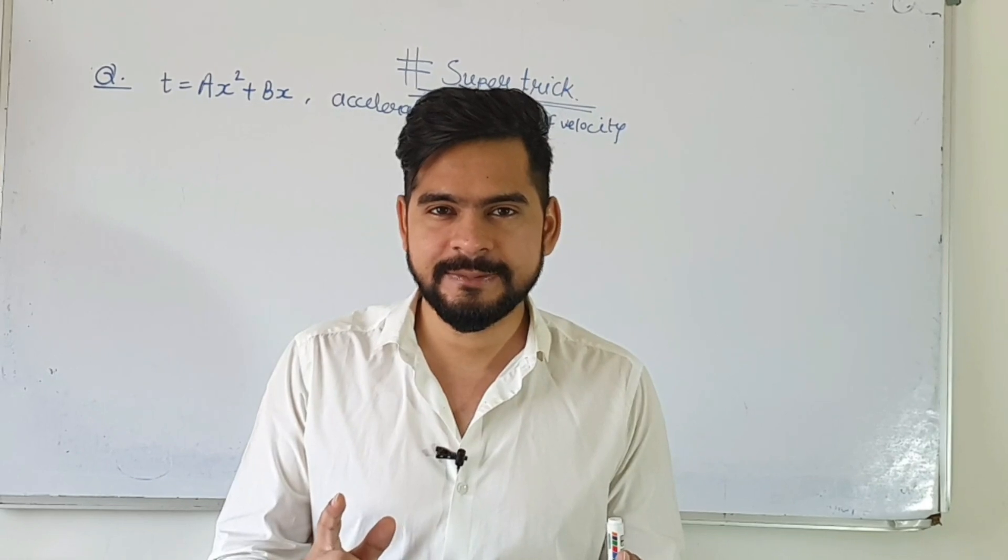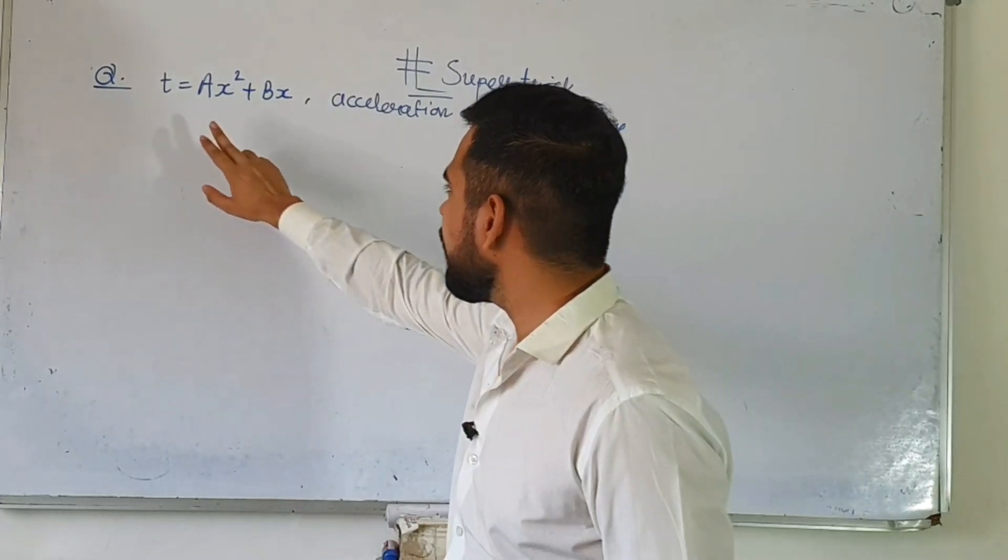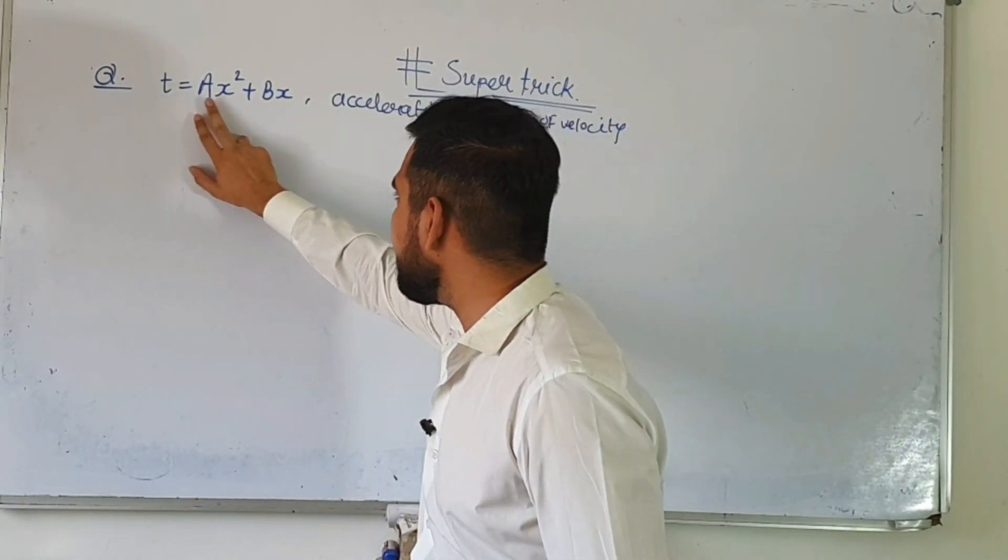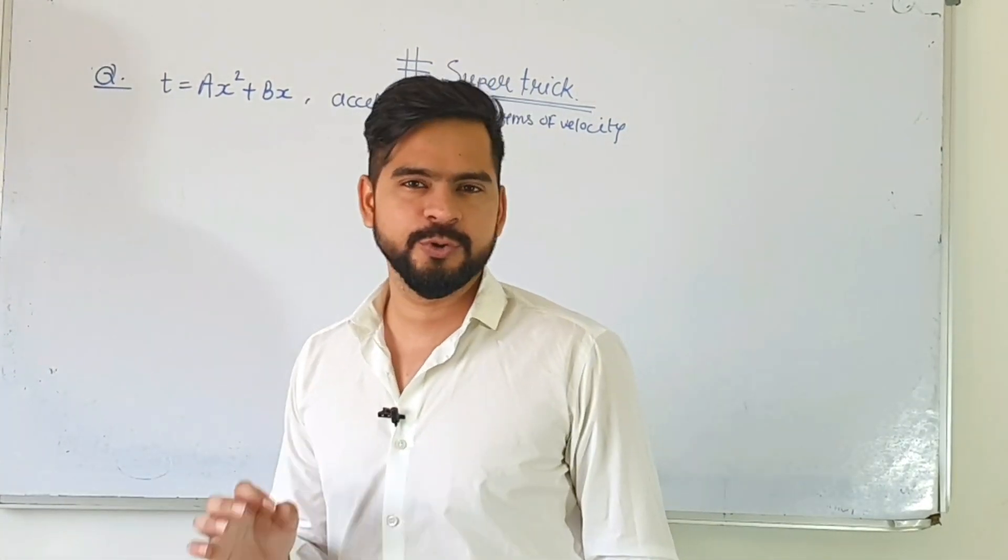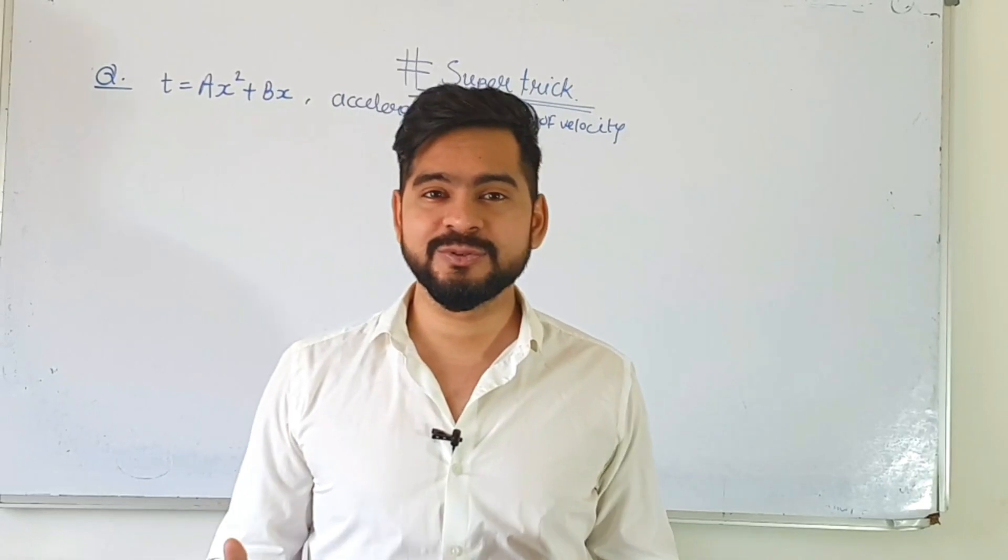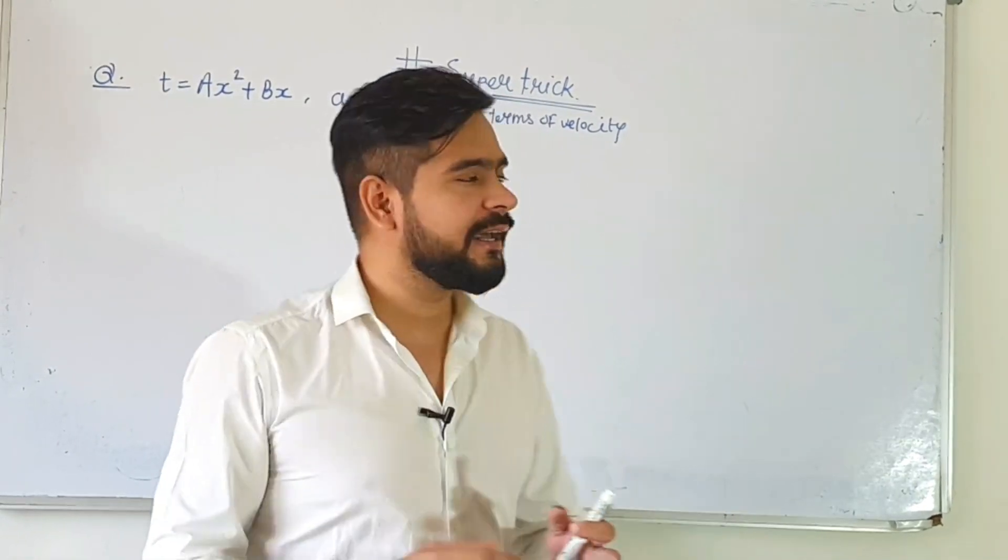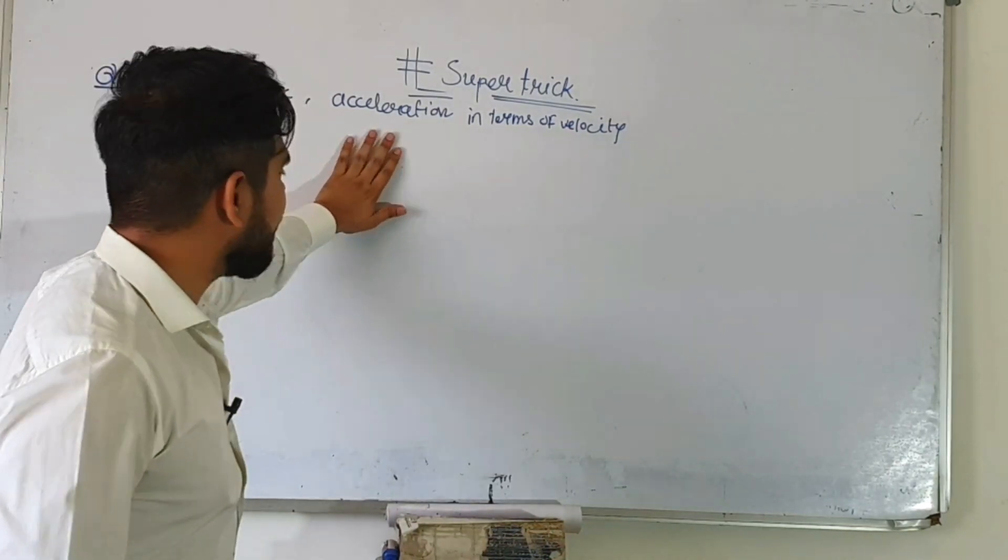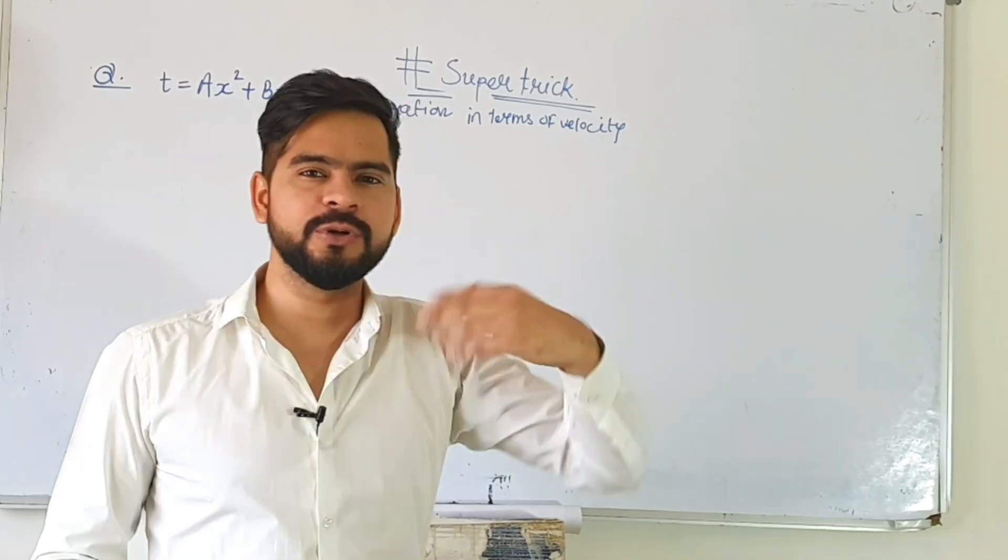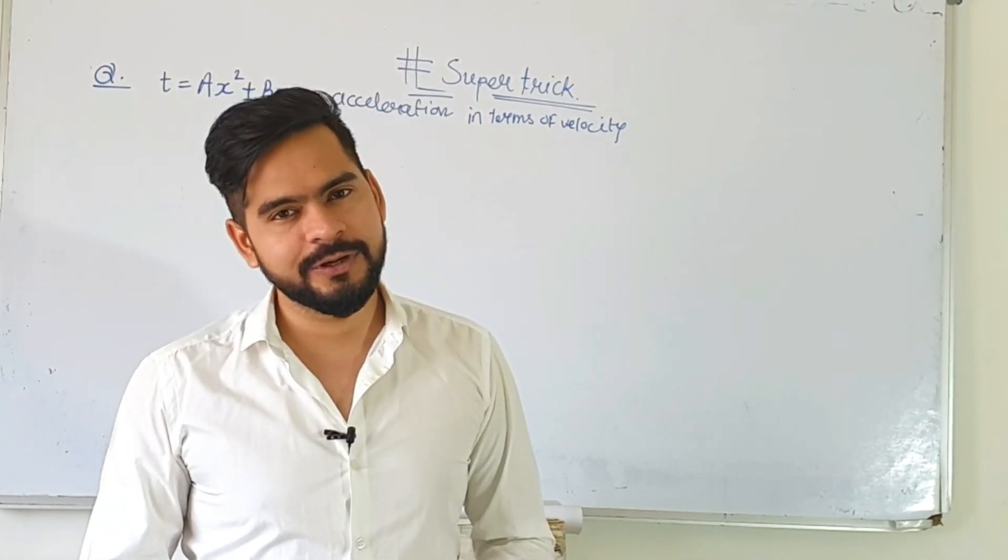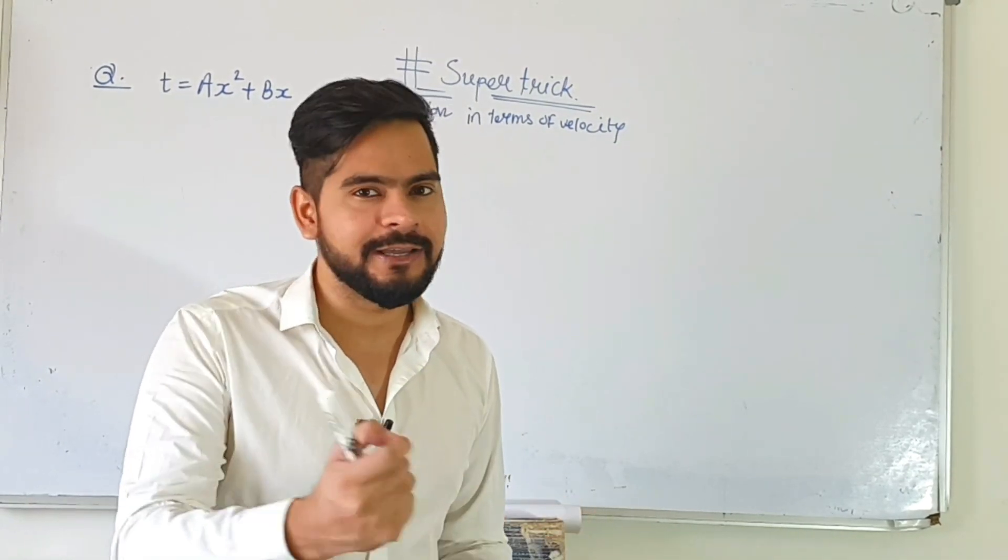So the question is: time t equals ax square plus bx, where a and b are positive constants. It can be any number, but you know that x is variable, right? T is time, x is position. We have to find acceleration in terms of velocity. There's a big method, but as you know in this class you will get a short trick as well as that big method. So let's go ahead and learn the trick.